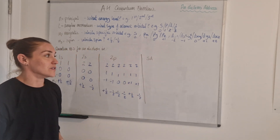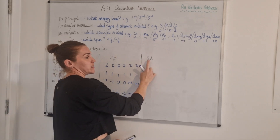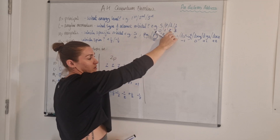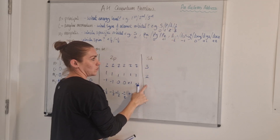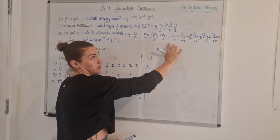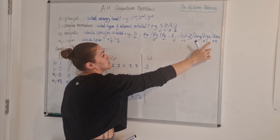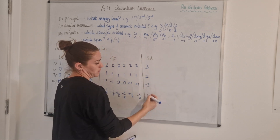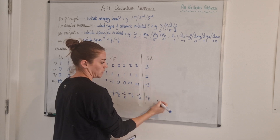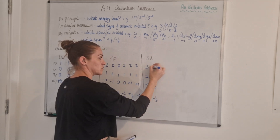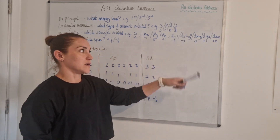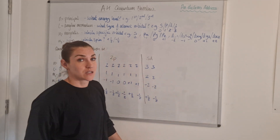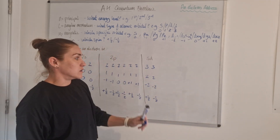For the 3d subshell: it's in the third energy level, so n is 3. It's in a d orbital, so l is 2. There are five d orbitals, so we can pick ml from minus 2, minus 1, 0, plus 1, or plus 2. I'll pick minus 2, and then the spin can be plus a half or minus a half. Because there are five different types of d orbital, there are actually 10 possible sets of quantum numbers for an electron in the 3d subshell.